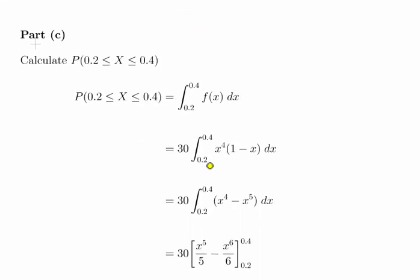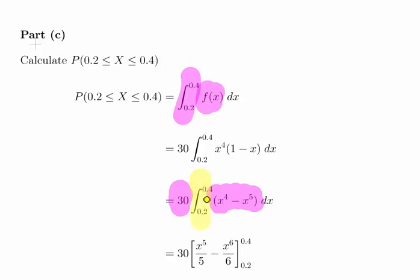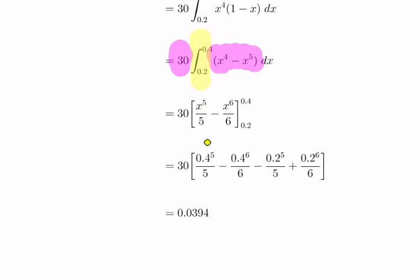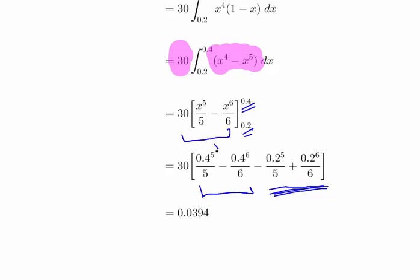The last part is to calculate the probability that x is between 0.2 and 0.4. This is similar to before: we integrate the pdf from 0.2 to 0.4, so 30 times x to the power 4 minus x to the 5, dx. We evaluate the same antiderivative — 30 times x to the 5 over 5 minus x to the 6 over 6 — using limits 0.4 and 0.2. A bit of calculator work gives us approximately 0.0394. That's the end of this worked example.